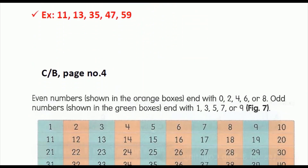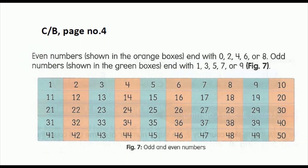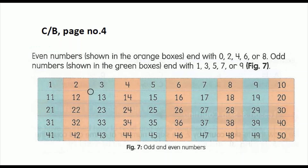Now open your content book, page number 4. In this picture you can see numbers from 1 to 50 colored with blue and orange shades. The numbers in the orange box end with the number 2 — see the first column — so all the numbers ending with 2 are even numbers.